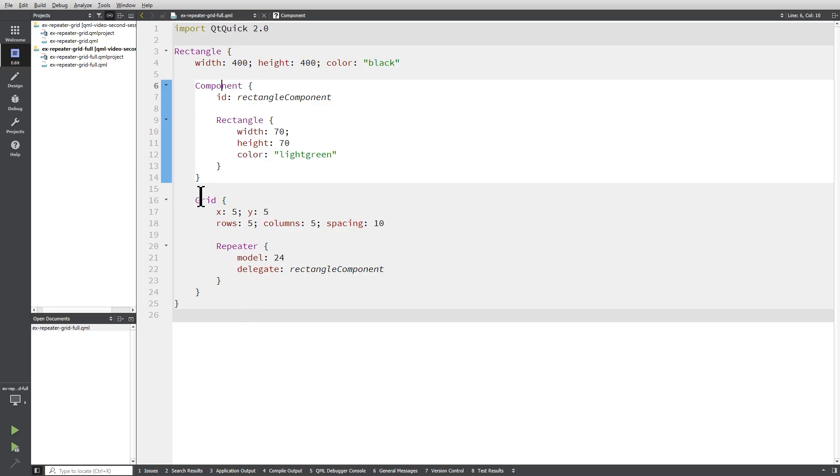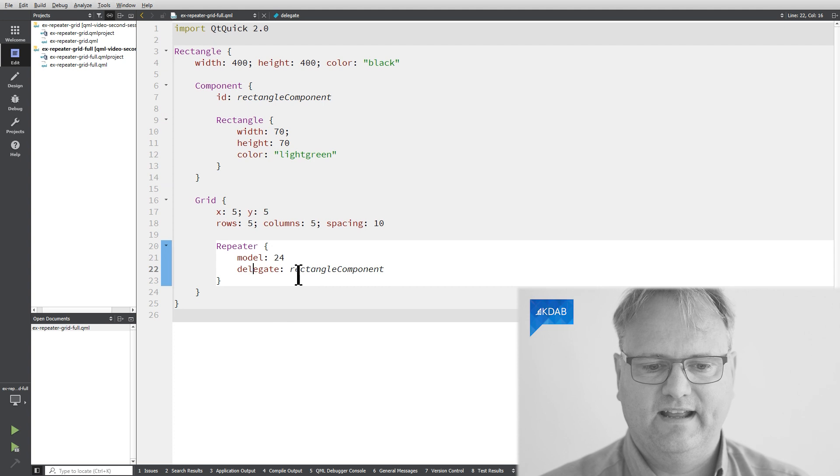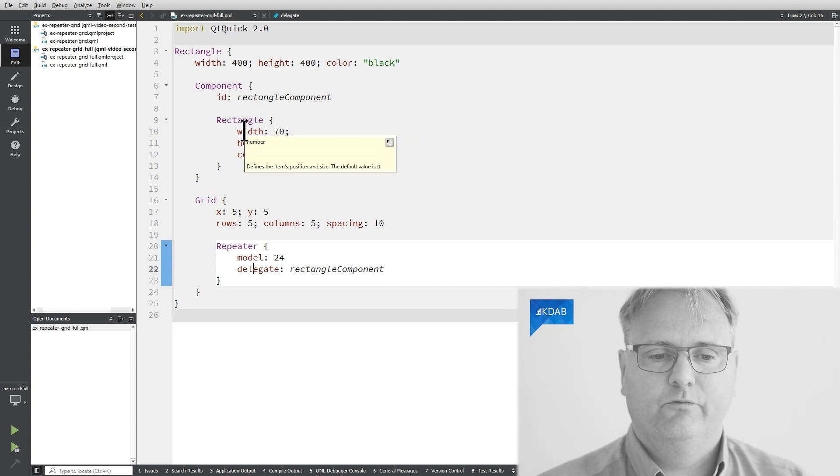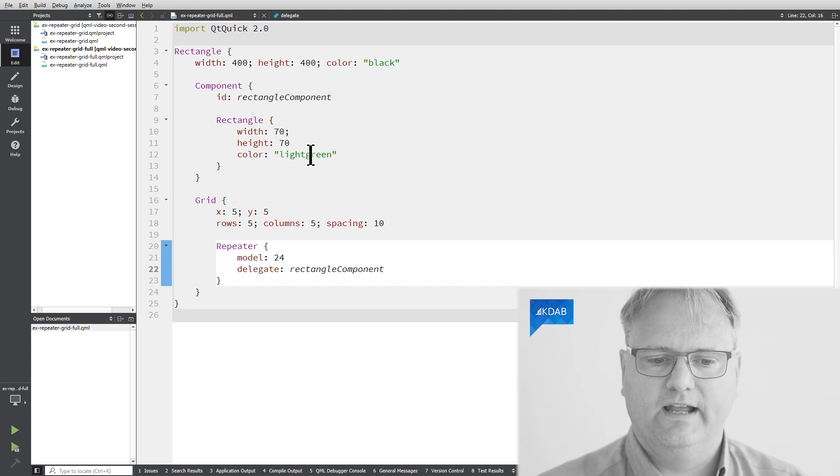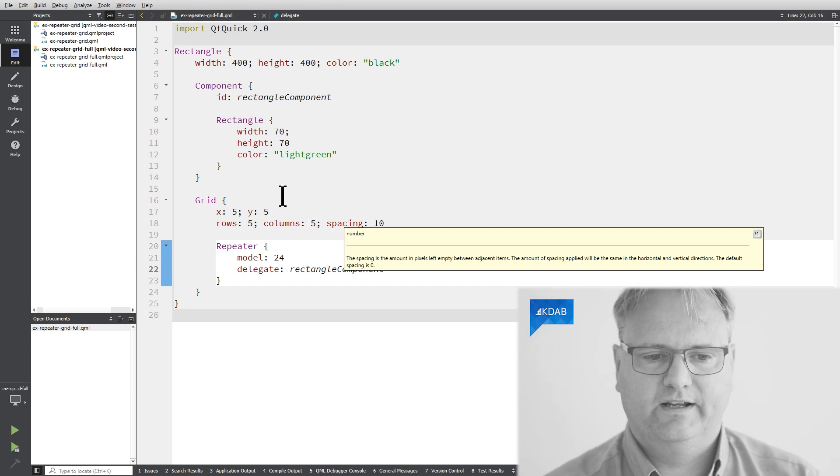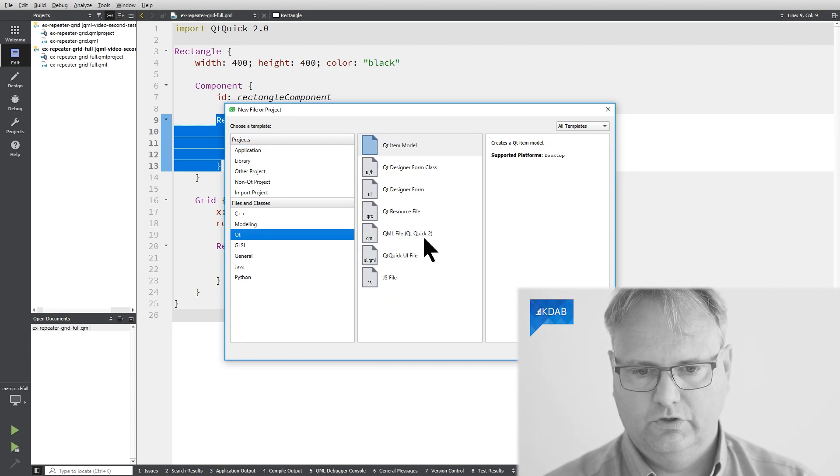The component is not an instantiated element. So in this example, we have the grid just as we have before. My repeater this time has a model 24. And it has a delegate that is a rectangle component. My rectangle component has an ID. And inside the rectangle component, we have the actual element. That's the blueprint. Rectangle width 70, height 70, and color light blue. I can even make this more as you would expect it.